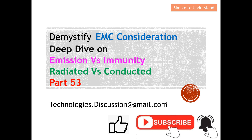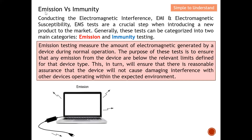Let's understand the key difference between emission and immunity. First, let's understand the background — why we need to conduct these tests. Electromagnetic interference (EMI) and electromagnetic susceptibility (EMS) tests are all critical steps when we want to introduce a new product to the market. In general, these tests can be categorized into two main categories: emission and immunity testing.